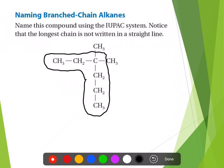So now we've identified the parent chain — that's rule number one. Number two, you have to number the carbon atoms in that parent chain. The numbers are going to become a part of the name because they tell us where things are attached in that parent chain. The name of the parent chain is going to become the base of the name, and then we're just going to add on to that. So you need to know the location where we're going to add on to the parent chain.